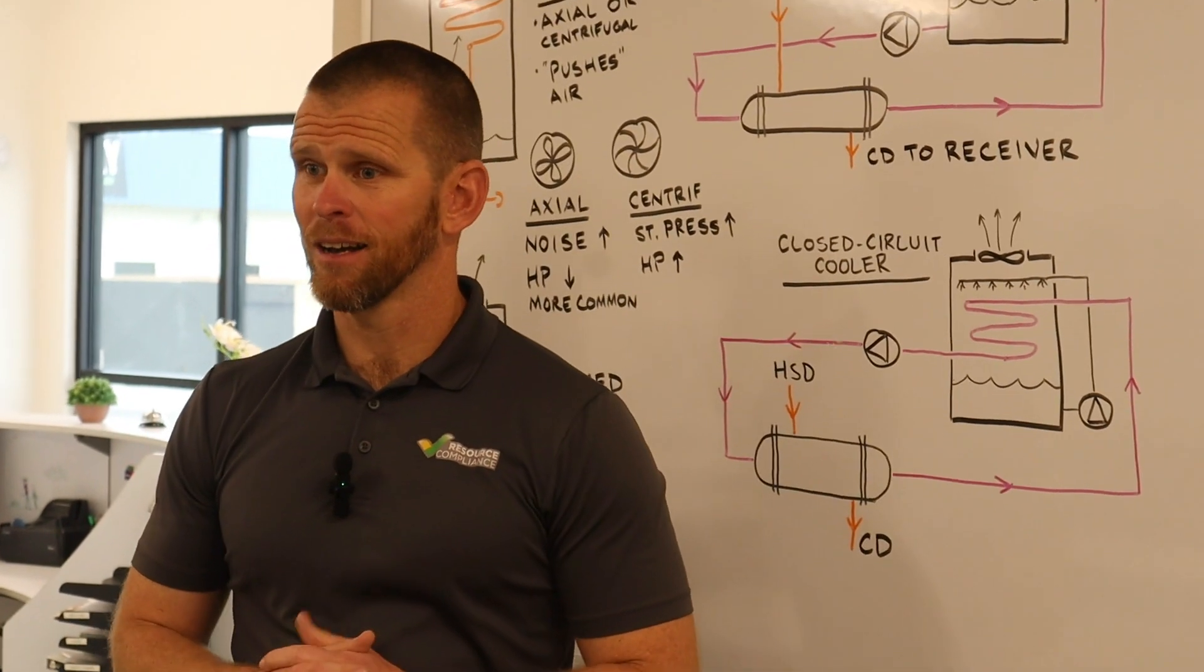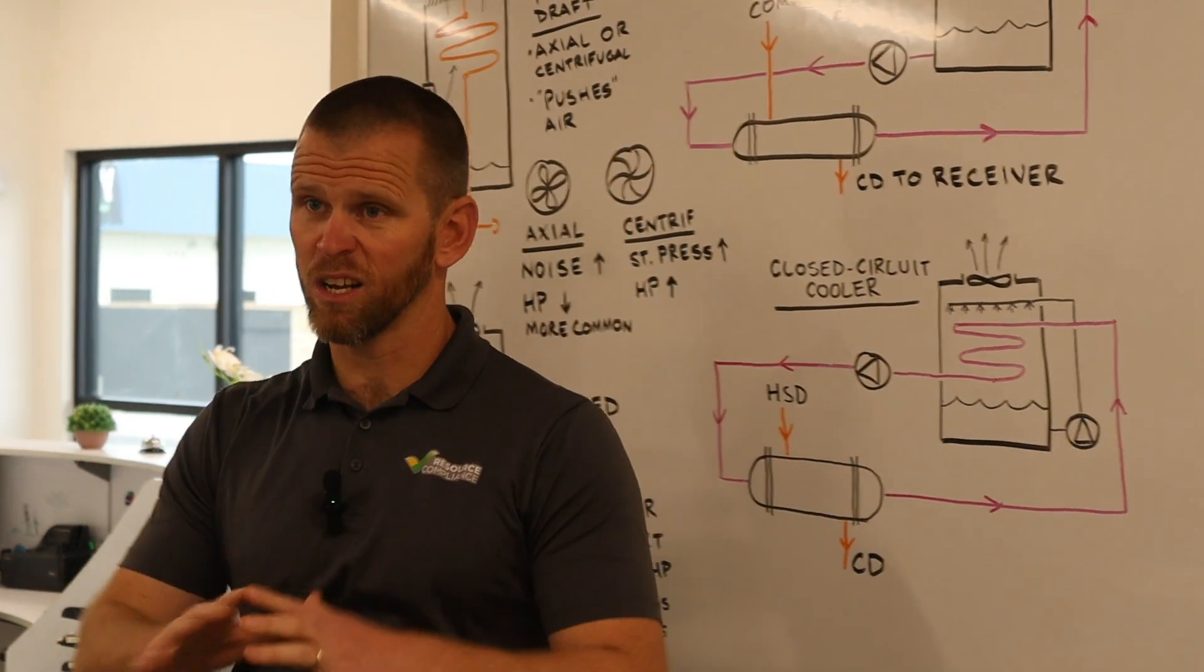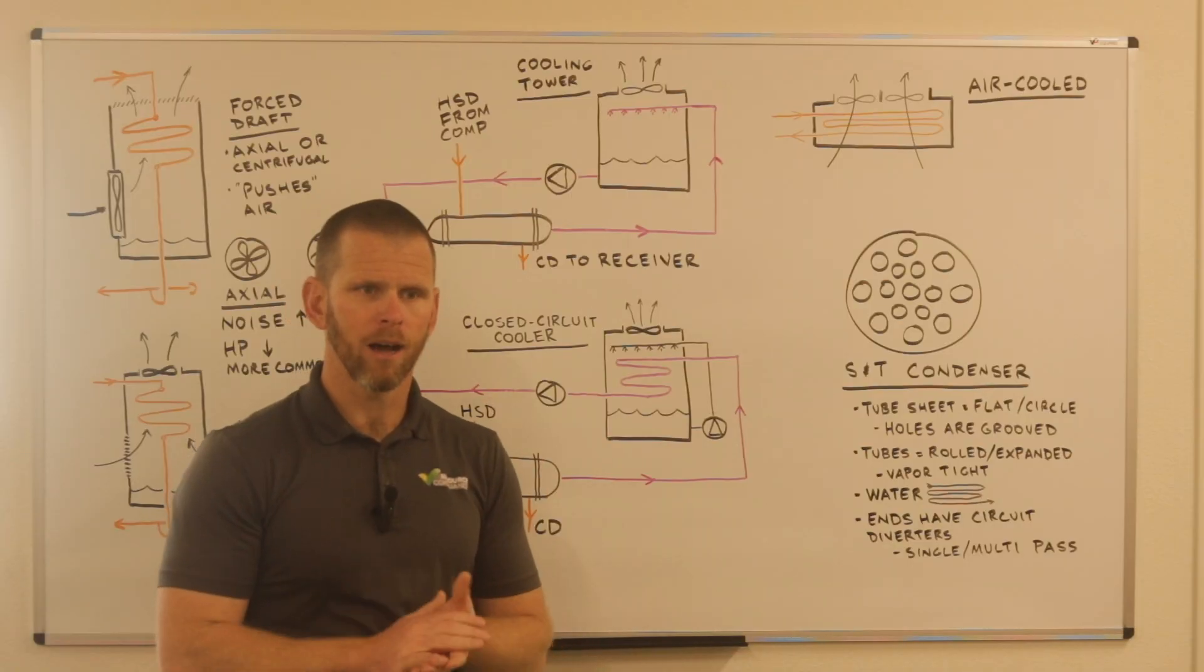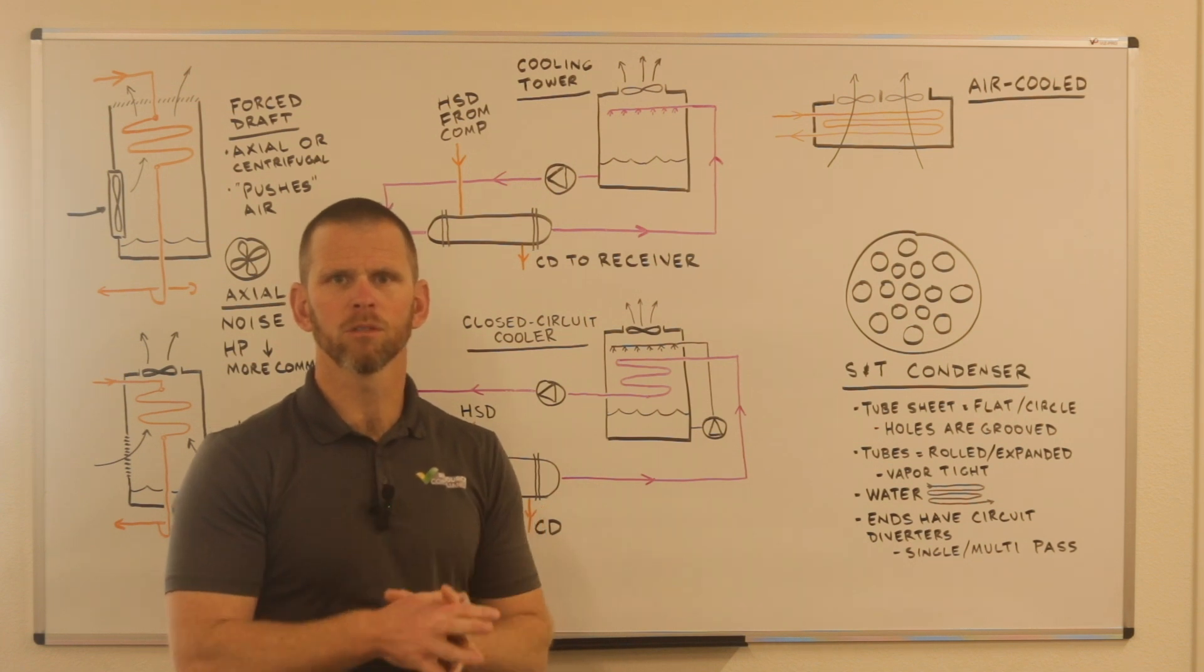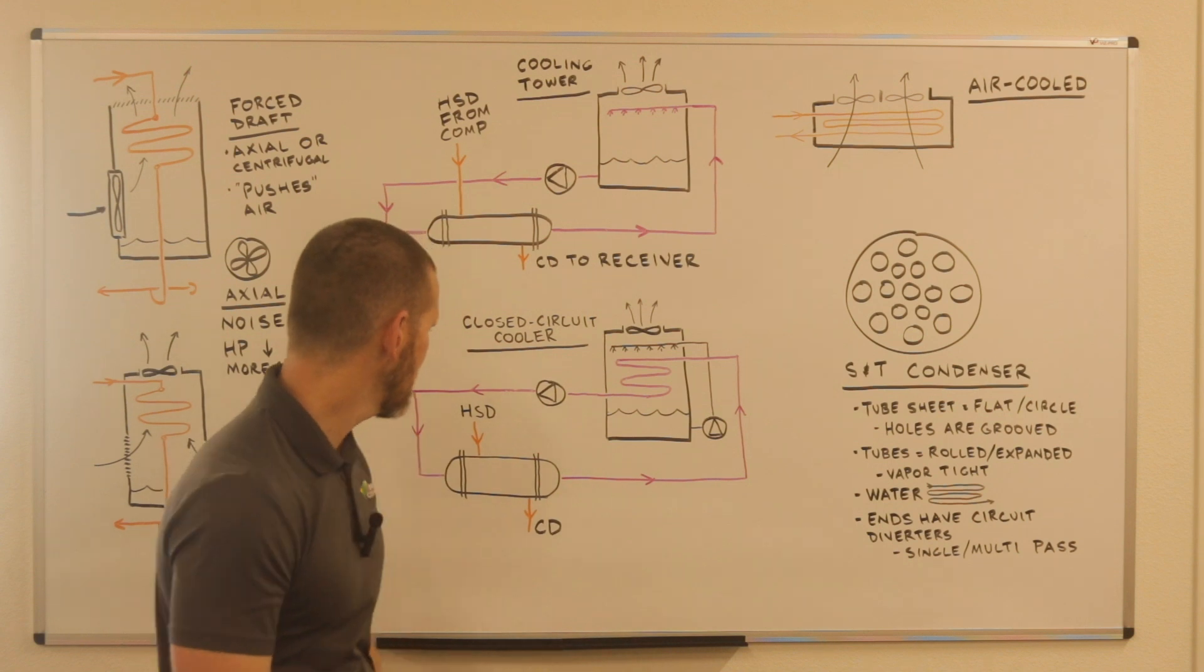The tubes themselves are subject to the same concerns that can happen on an evaporative condenser when it comes to scaling. That's mineral deposits being left on the tubes, which fouls the surface, which reduces the capacity.